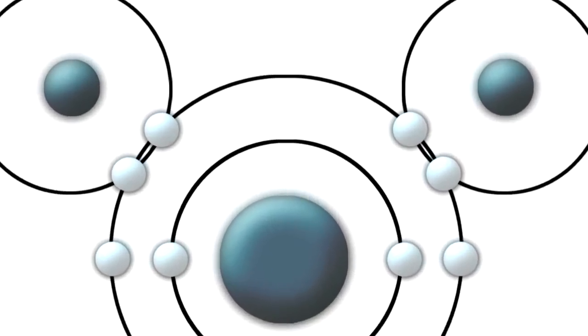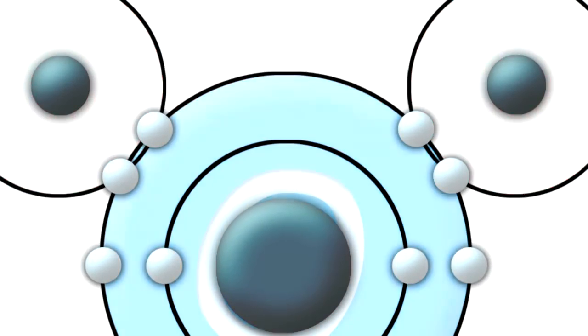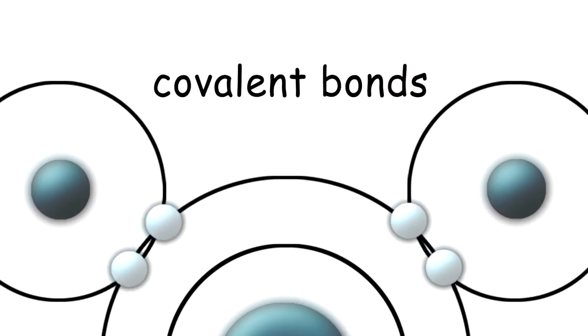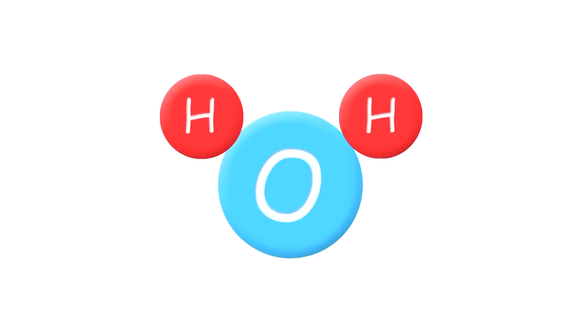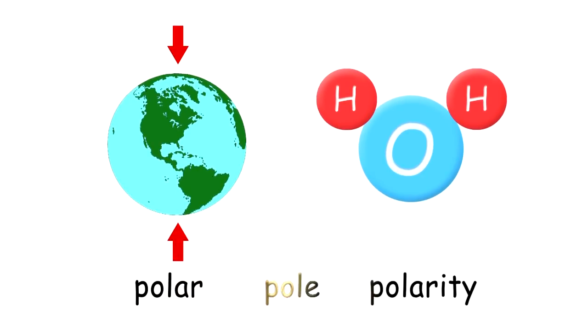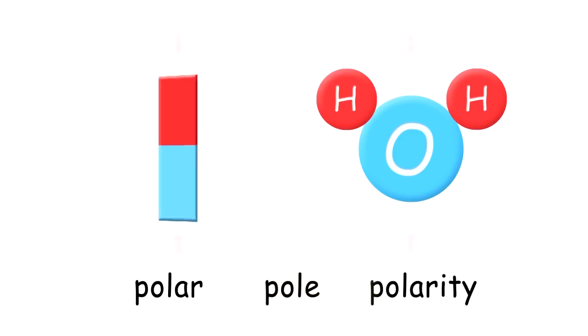In water, just so you'll know for later, the H's and O's are held together by covalent bonds, by sharing electrons. H2O is a polar molecule. The same way our planet has north and south poles on opposite sides, the H2O molecule has two poles on opposite sides. And like a magnet, H2O has one positive end and one negative end.